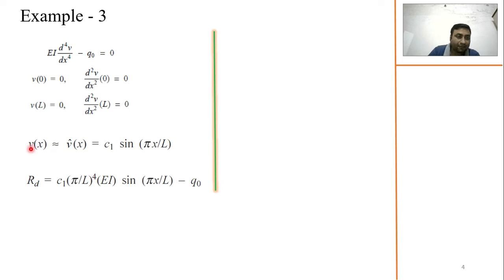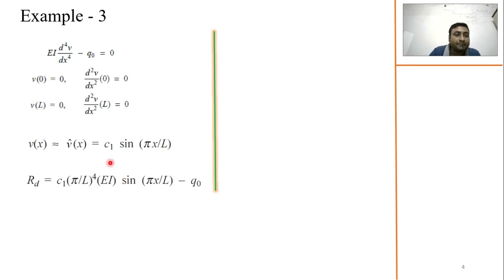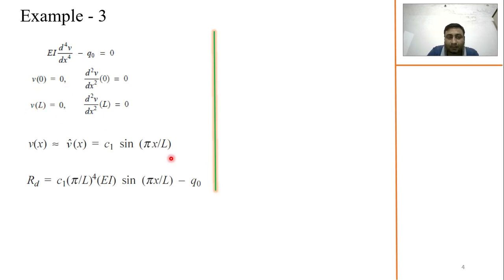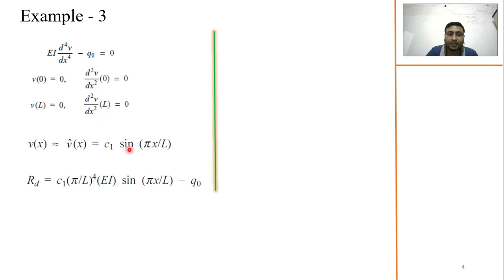The trial function used here is v = c₁·sin(πx/L). Let us verify it satisfies boundary conditions: at x = 0, sin(0) = 0, so v = 0 ✓; at x = L, sin(π) = 0, so v = 0 ✓. Similarly, taking the double derivative — sin becomes cos becomes sin — the same behavior holds at the boundaries, satisfying all four boundary conditions.